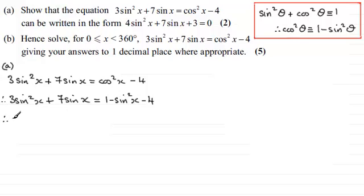Now if I add sin²x to both sides we're going to have 3sin²x plus another sin²x, that's going to be 4sin²x. And then if we follow it with the +7sin x, and then 1 - 4 is -3, but if I add 3 to both sides we're just going to get +3 there = 0. And that's what we had to show.